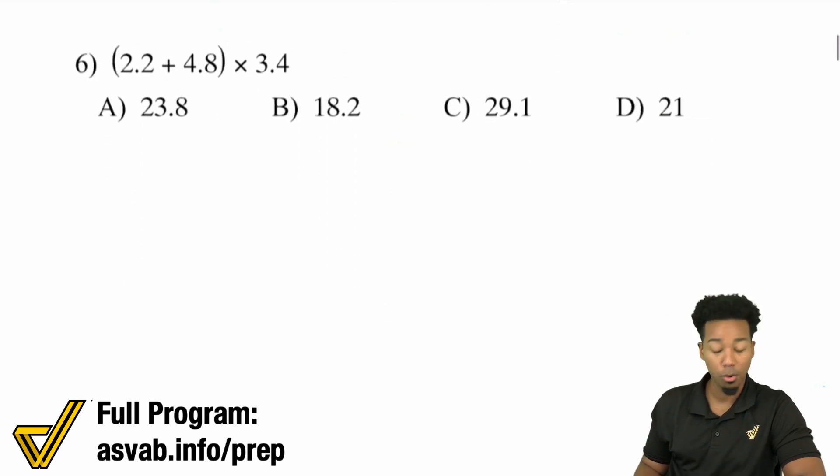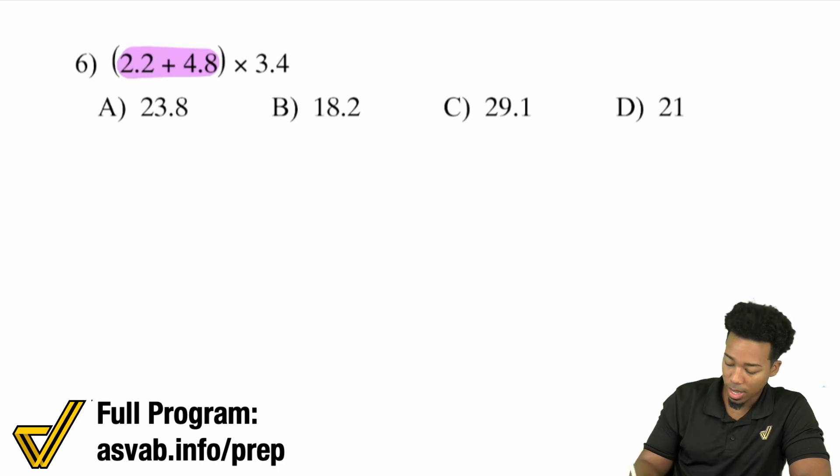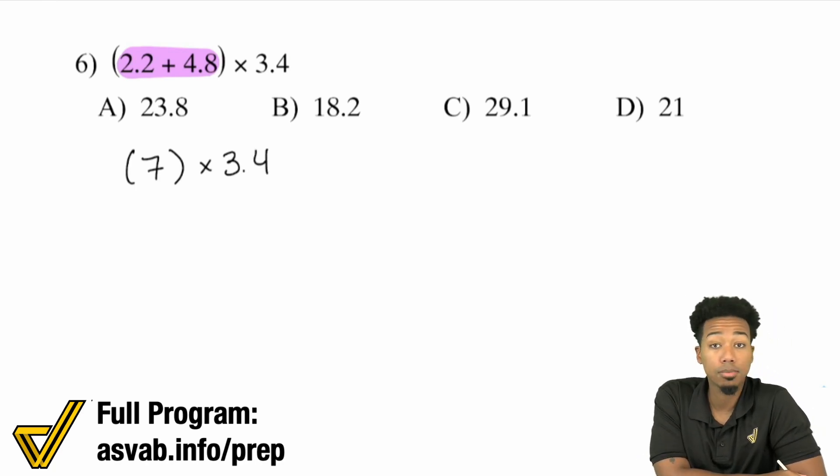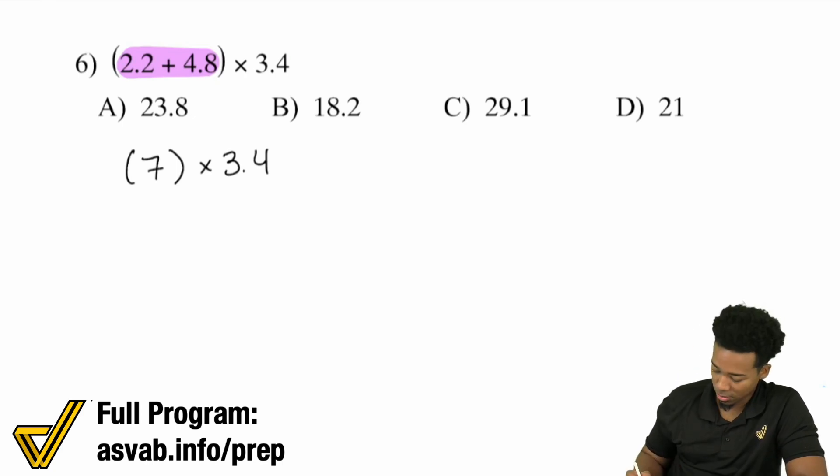2.2 plus 4.8 all multiplied by 3.4. Sounds good. What we're going to do here is we're going to take care of business. 2.2 plus 4.8. I know that I can go ahead and mix together the 0.8 and 0.2 to make a whole one. So I can just go ahead and say, let me put the 0.2 over here. That's 5. 7. So this ends up becoming 7 times 3.4. Sounds good. And if we wanted to use some mental math, we absolutely could. Because 7 times 3, 21. 7 times .4, that's 2.8. 28 and put the decimal back 2.8. So we have ourselves 21 and 2.8. So that becomes 23.8. And there's my answer right there.